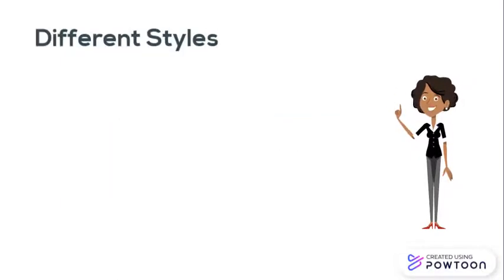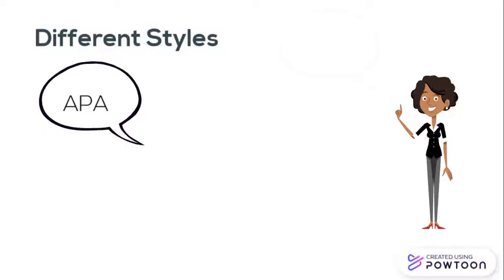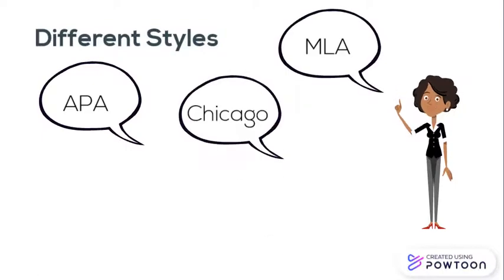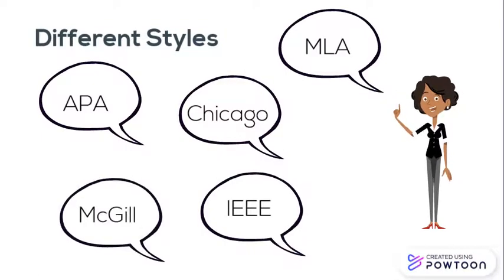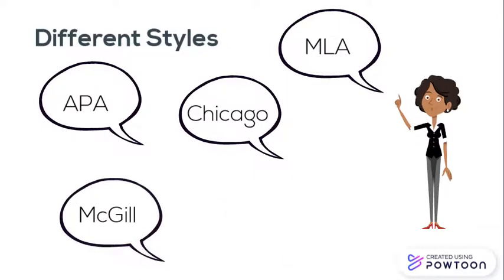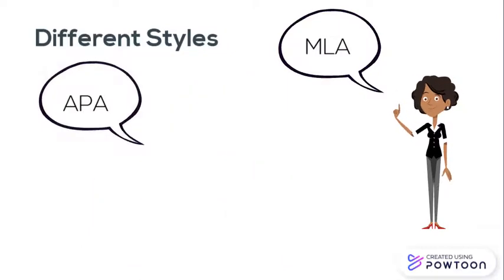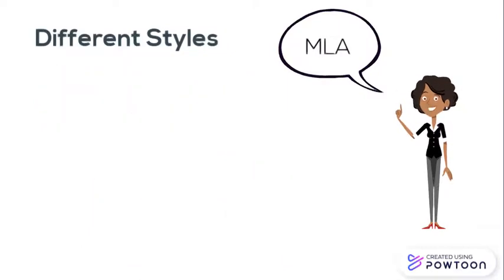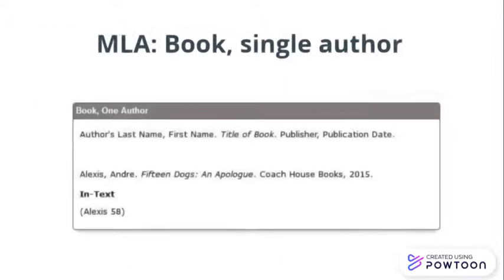There are a number of popular style guides, and they all show you how to cite a lot of different sources. But for now, let's just look at one style and one source type — for example, MLA style and a print book with a single author.